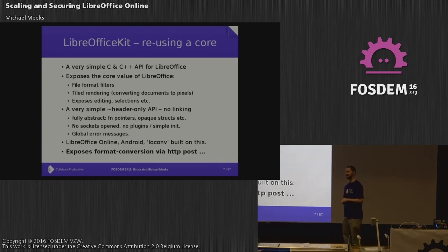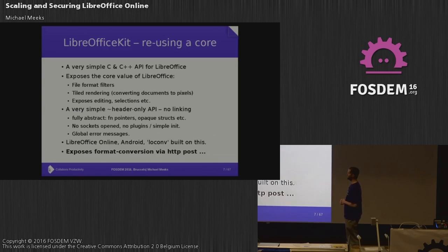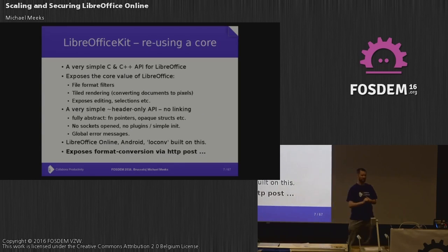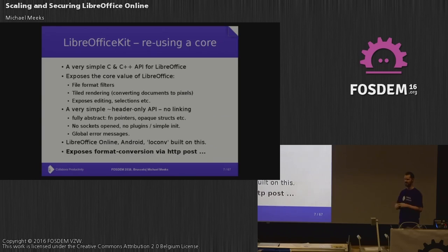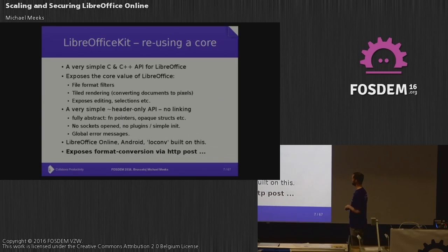So how do we do that? We have a thing called LibreOffice Kit. This exposes the core of LibreOffice — so there are file format filters, the ability to render content, and editing: the raw core editing functionality, which are things that make LibreOffice outstanding and different in its class.